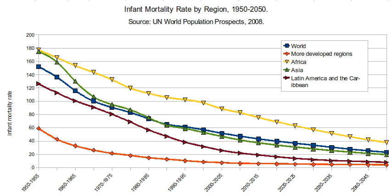Focusing on preventing preterm and low birth weight deliveries throughout all populations can help to eliminate cases of infant mortality and decrease health care disparities within communities. In the United States, these two goals have decreased infant mortality rates on a regional population level, but have yet to see further progress on a national level.